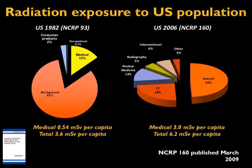This data is an update on previously published data from 1982. If you look at the 1982 data, the majority of radiation exposure to the US population was from background, and only about 15% was from medical exposure. However, the medical exposure portion has increased tremendously in the past 25 years, and one of the major contributors is CT dose — that's where the emphasis on CT dose has reached a critical point.